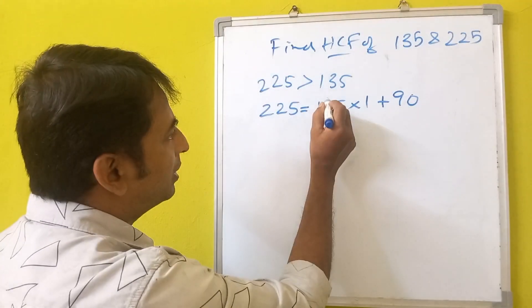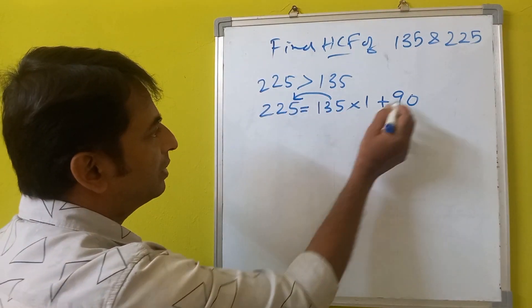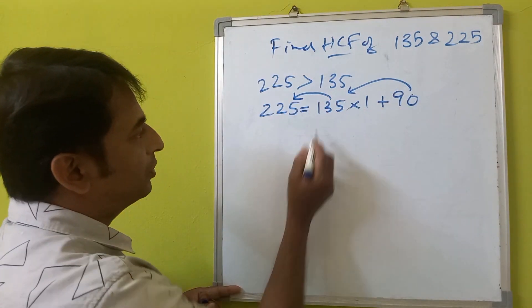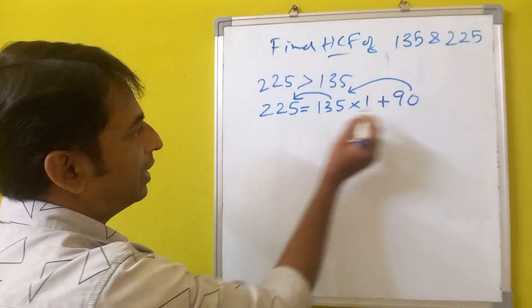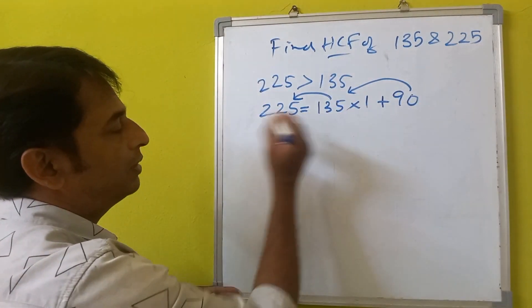In the next step, you will shift this to this place and this to this place. We will shift the divisor to this place and remainder to divisor's place.